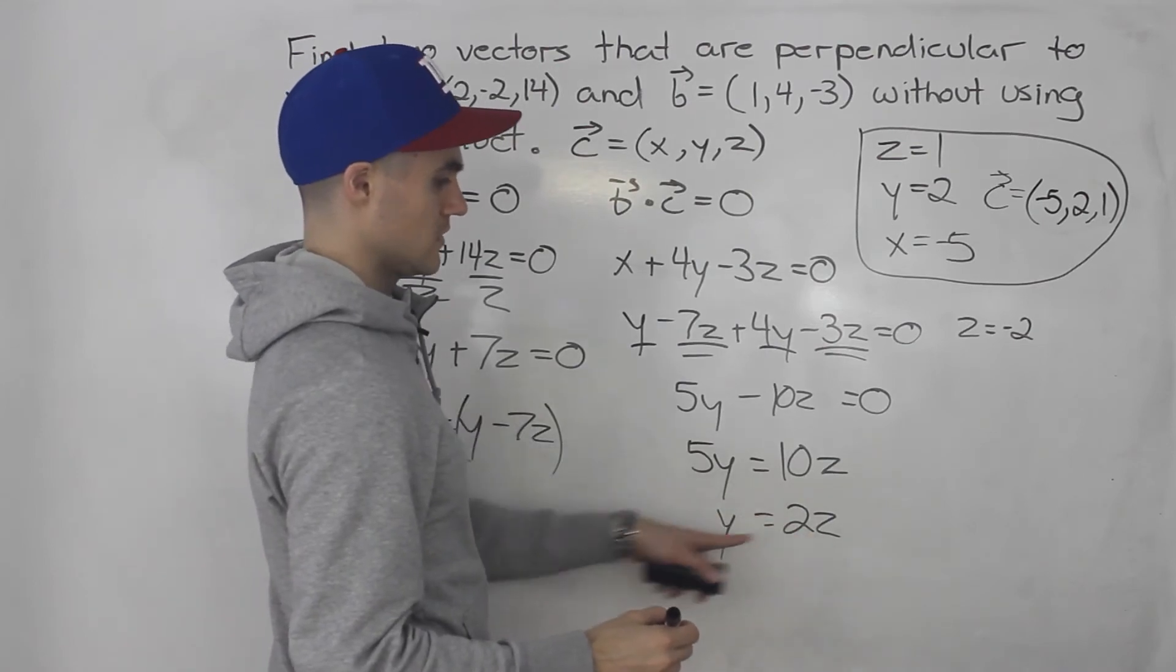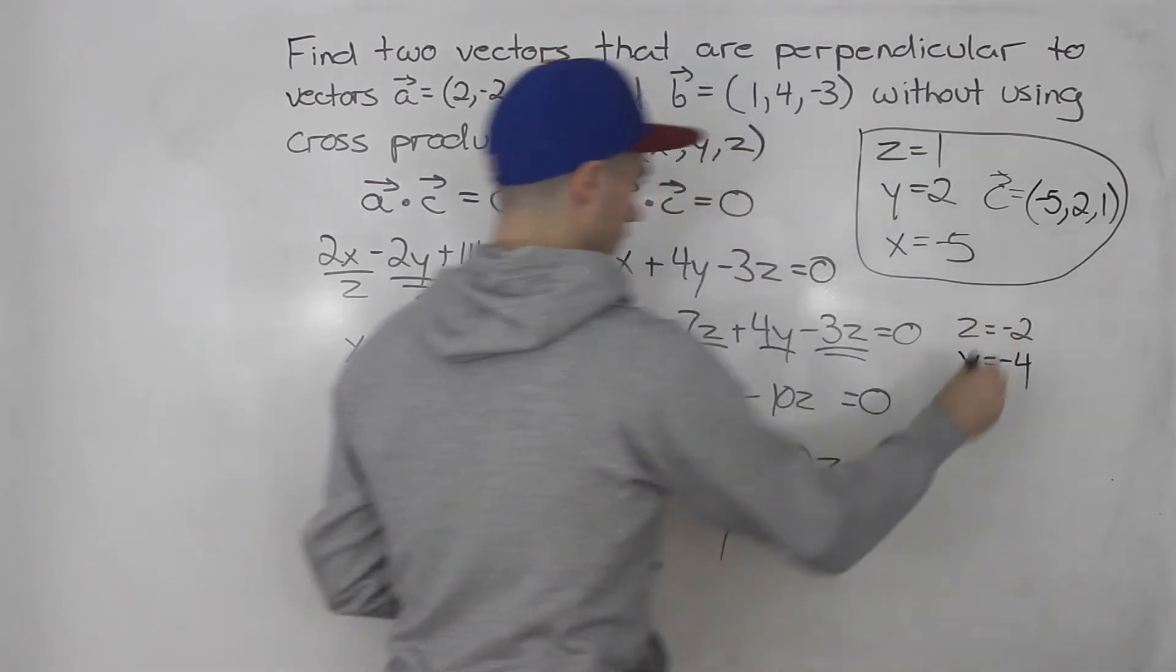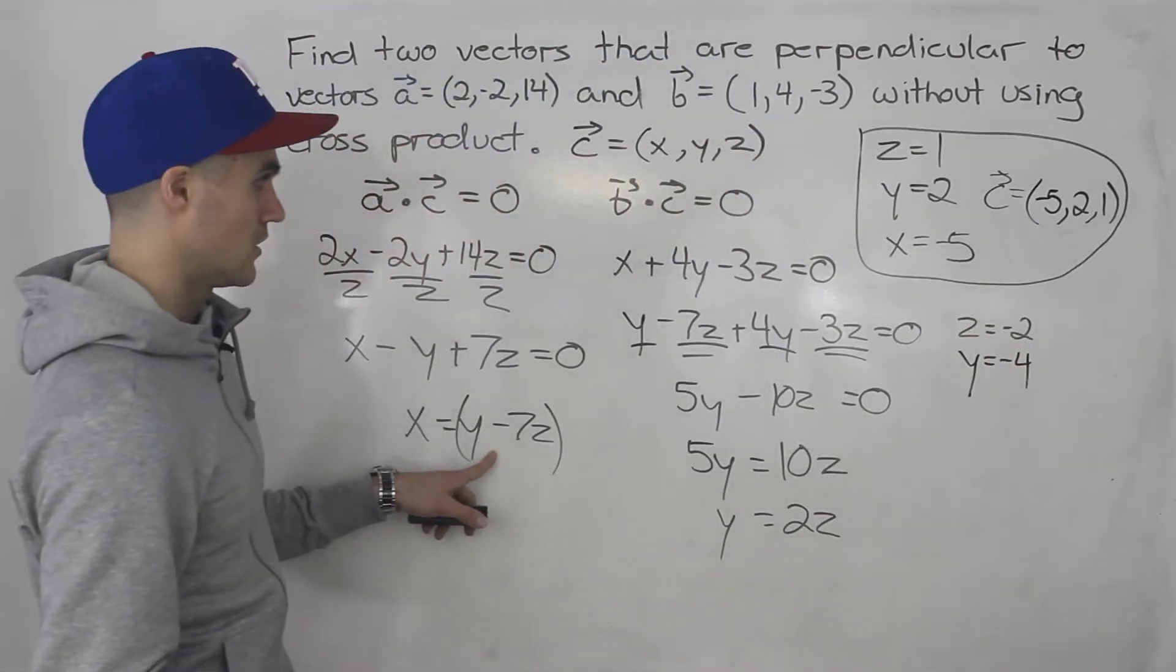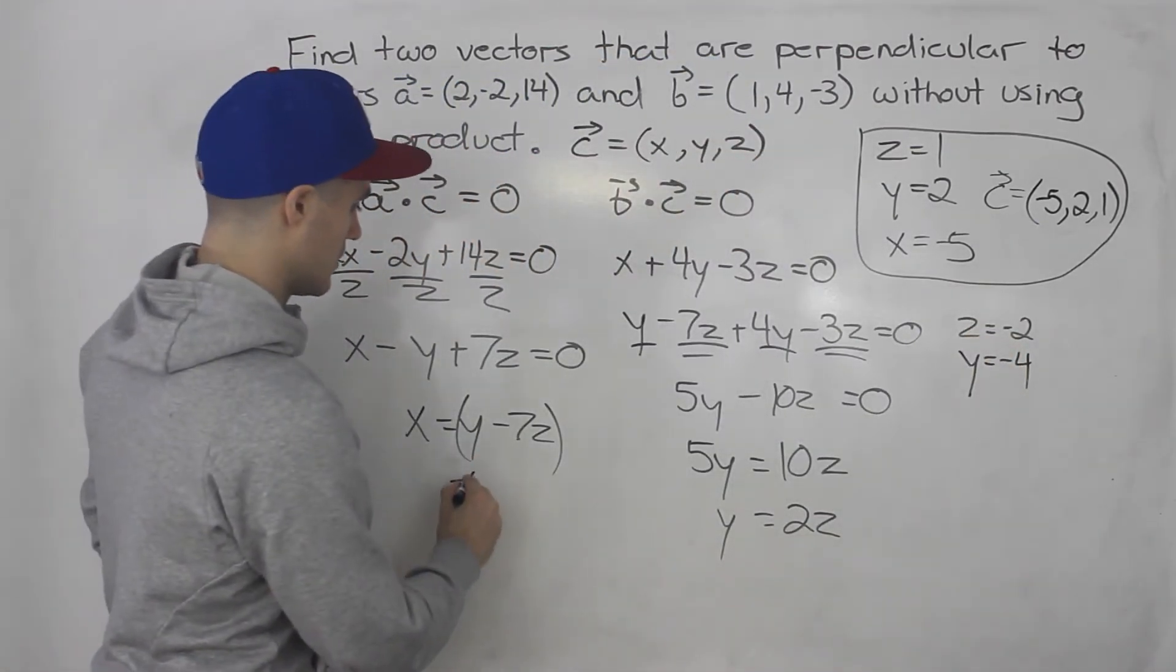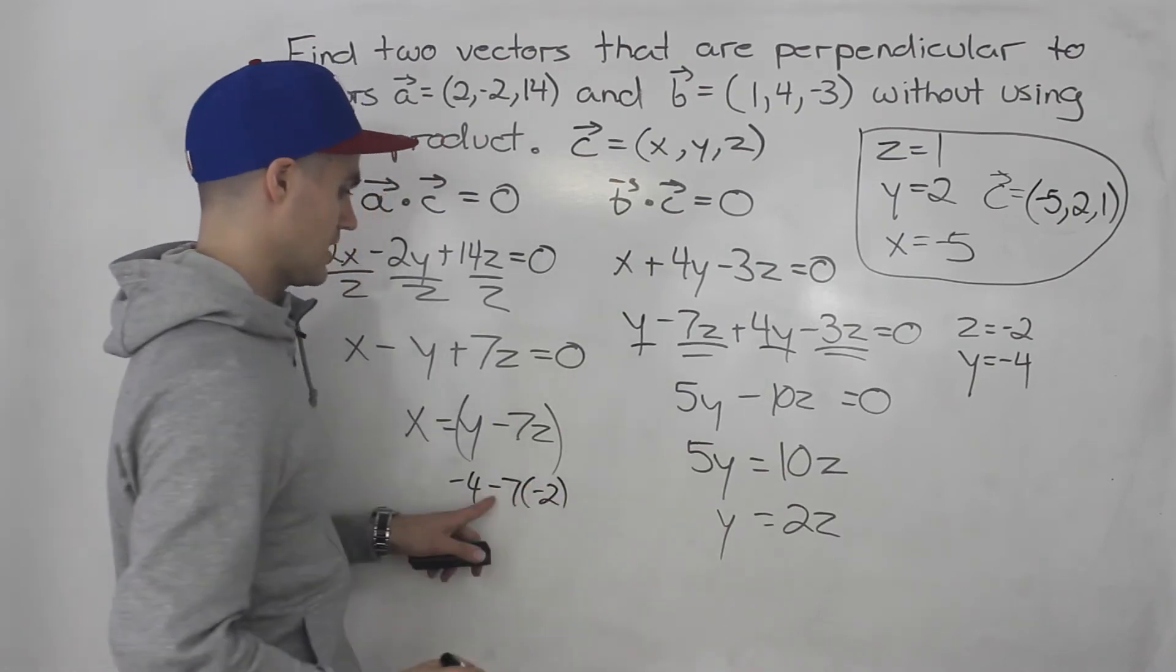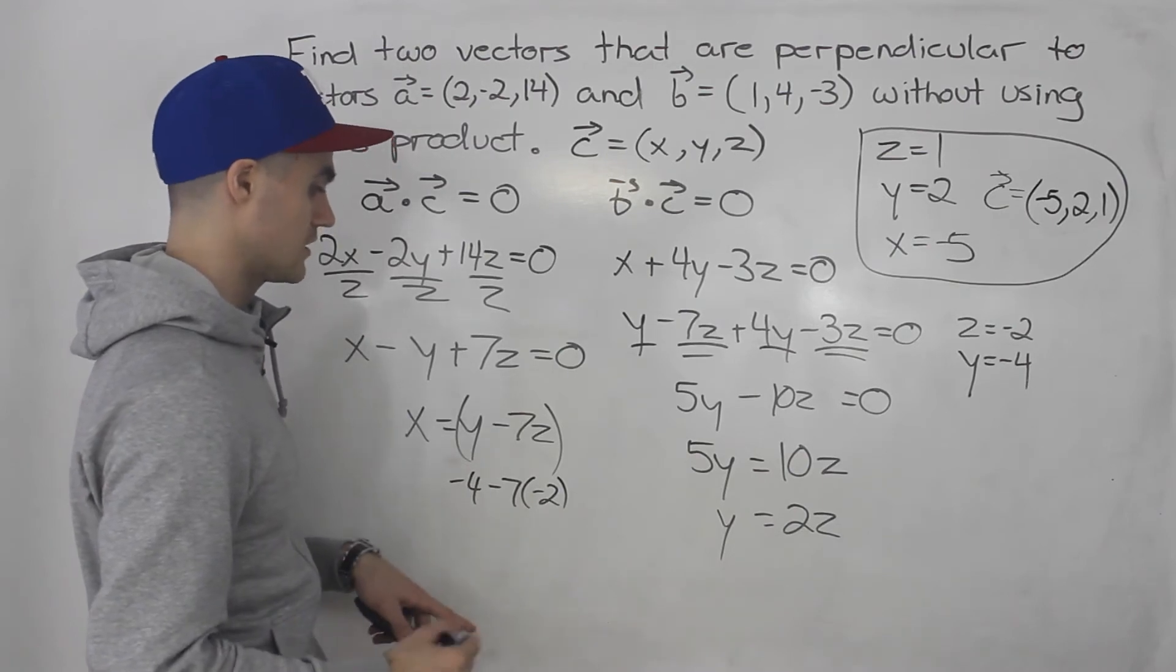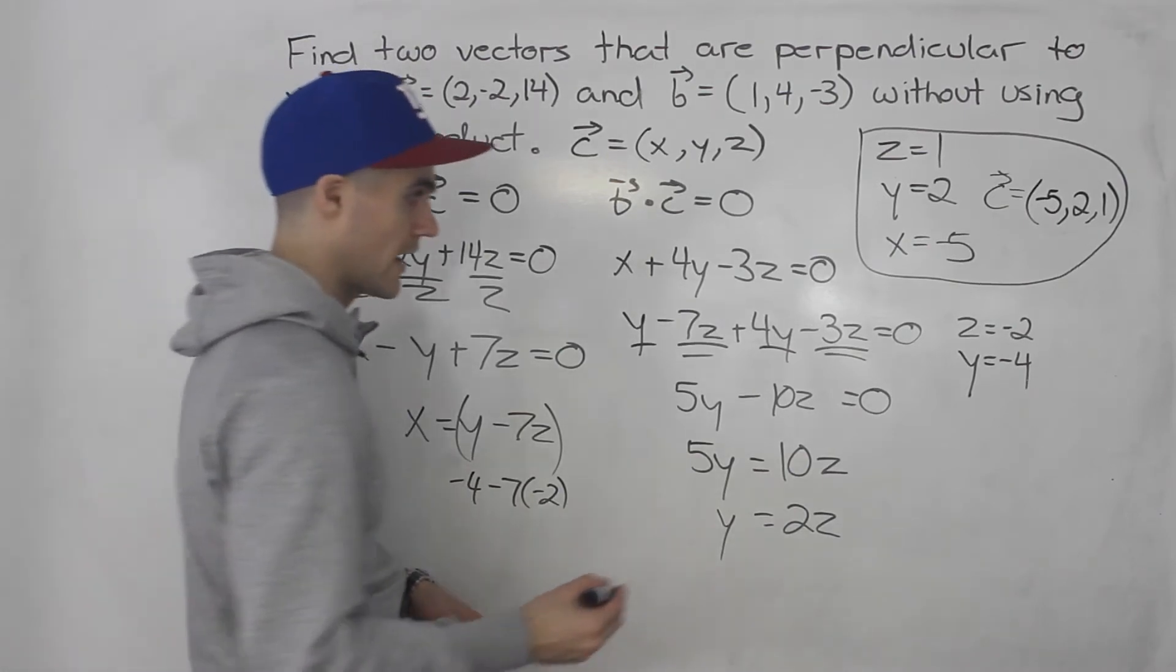Well, 2 times negative 2 would give us negative 4 for Y. And then if we plug both of those here, Y would be negative negative 4 minus 7 times negative 2. Negative negative turn to a positive. So negative 4 plus 14 gives us positive 10 for X.